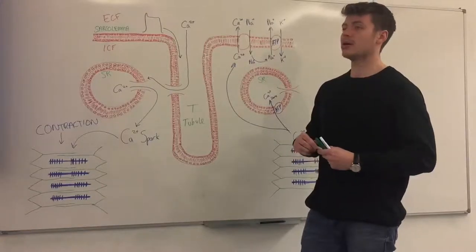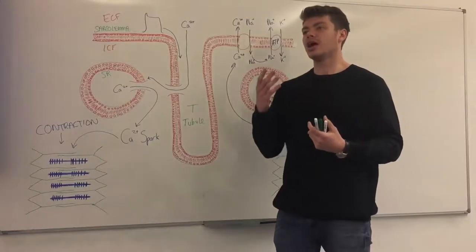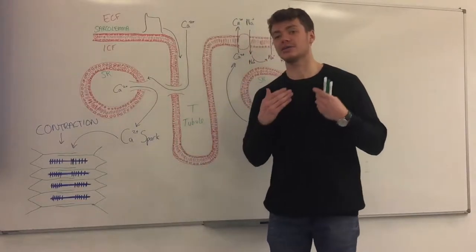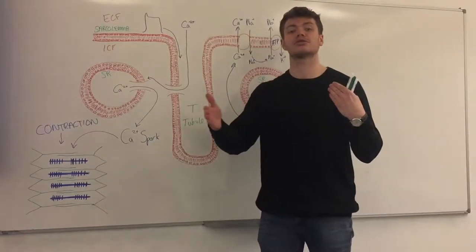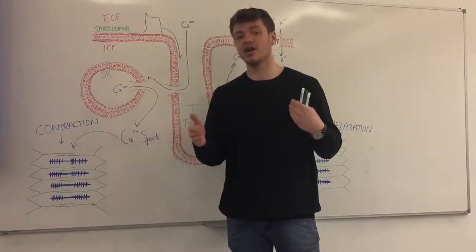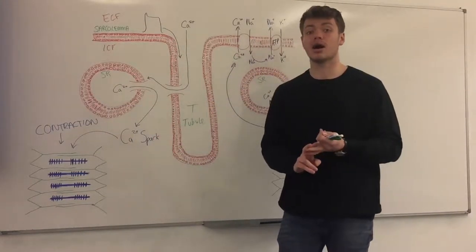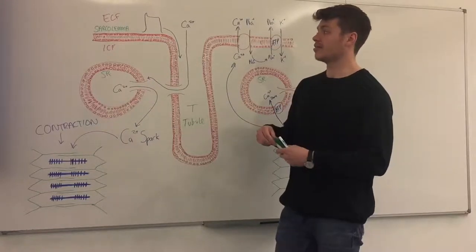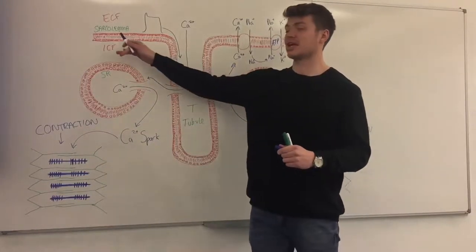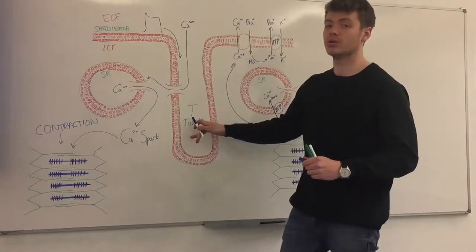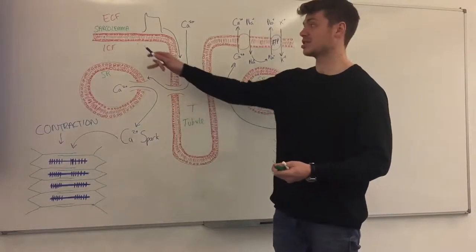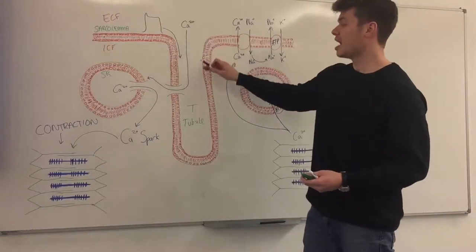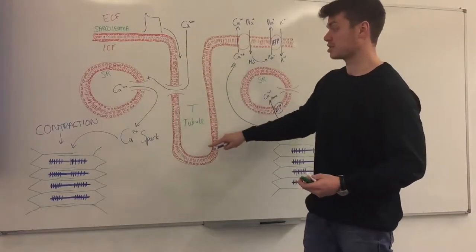If we remember from before, we have an action potential that occurs somewhere in the heart and it starts to flow between all the cells because each cell is connected to each other both physically and ionically. As it travels through, eventually it's going to get to a part of the cell called the T-tubule. The reason why it's called a T-tubule is because it's an invagination of the cell membrane or the sarcolemma and it looks like a T.